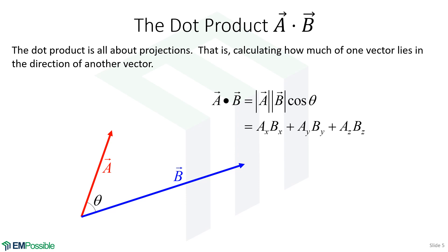Now the more interesting topic: vector products. We start with the dot product. The dot product takes two vector quantities A and B and calculates a single scalar number. Dot products are all about projections — how much of one vector lies in the direction of another. In practice, we calculate dot products by multiplying the different vector components together and then adding them up. But the answer is also expressible as the magnitude of A times the magnitude of B times cosine theta, where theta is the angle between them. We use this first equation to interpret what the dot product means and the second to actually calculate it.